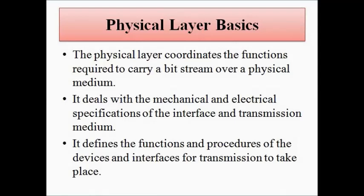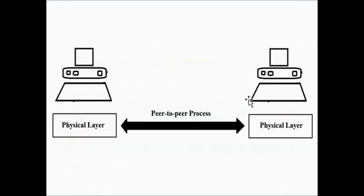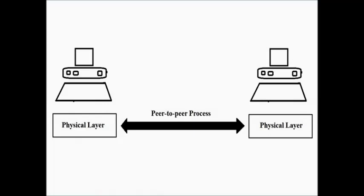As per the peer-to-peer process characteristic of the OSI model, two devices have the same parallel layers communicating with each other. So when two devices communicate, each layer communicates with the same parallel layer of the other device. The physical layer of the first device communicates with the physical layer of the second device — it cannot communicate with any other layer. That is what is called the peer-to-peer process.